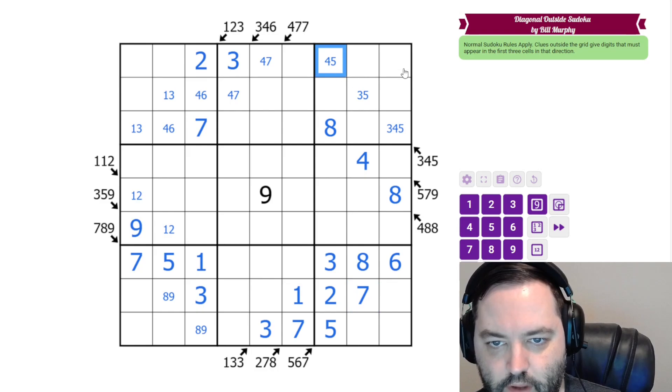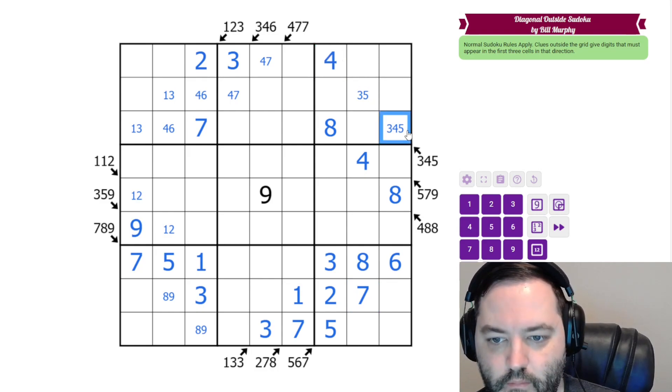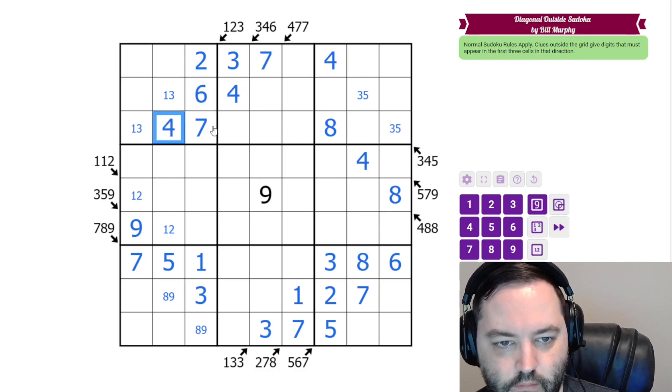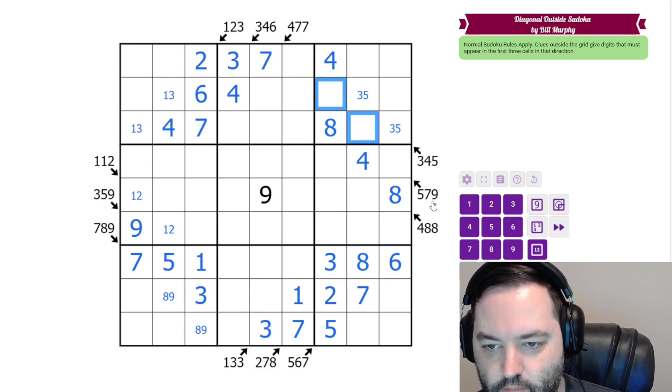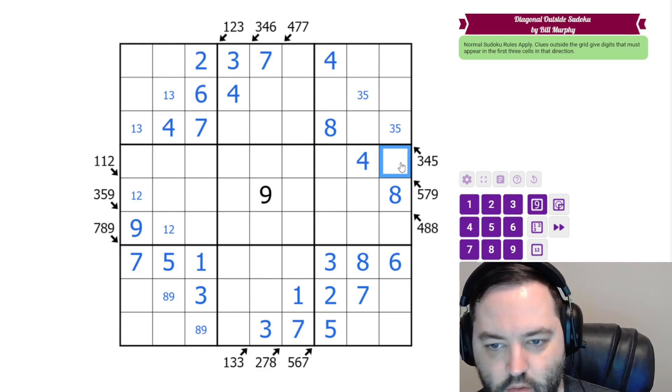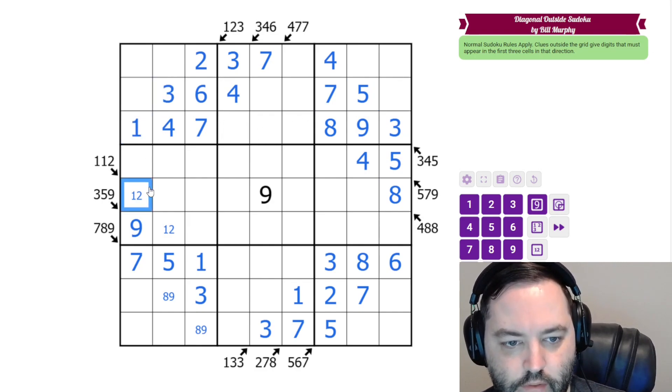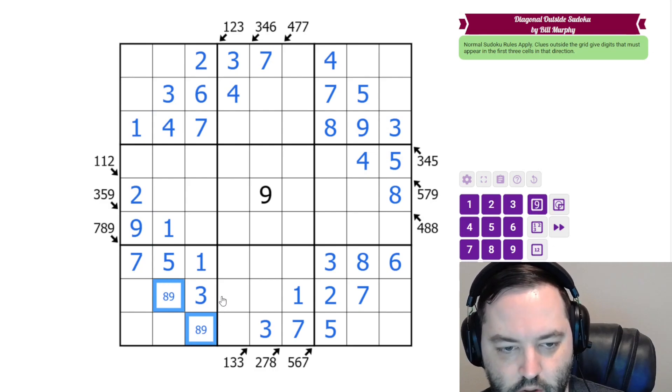Now this can't be 5, so this is our 4. And that's going to give us 7 and 4 here, 6 and 4 here. And then here we have 5, 7, and 9, but the 5 can't go in these cells. So this is 5, this is 9, this is 7. 5 is going to resolve 3 and 5 here. The 3 resolves 1 and 3, 2 and 1. And we're just left with this pair that we can't resolve yet.